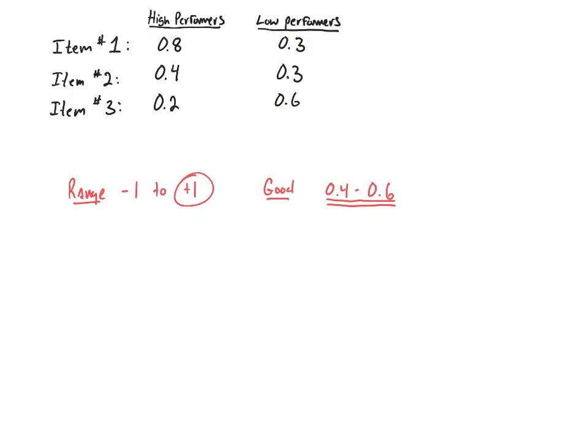And the further away from 1 we get, the less discriminating that question is between high and low-performers. If you are looking for a magical unicorn, a magical unicorn of a question would have a discrimination of 1.